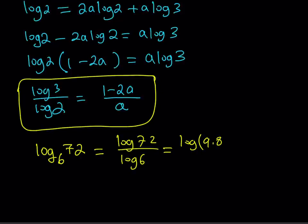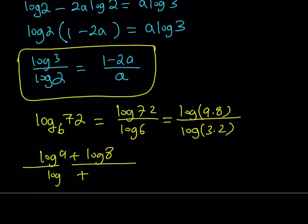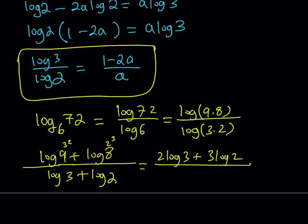And then separate it as log 9 times 8. Make sure that you are separating the different primes. And then you can write this as log 9 plus log 8 divided by log 3 plus log 2. And then log 9 is 3 squared, so it becomes 2 log 3. This is 2 cubed, and that becomes 3 log 2. And the bottom is good.